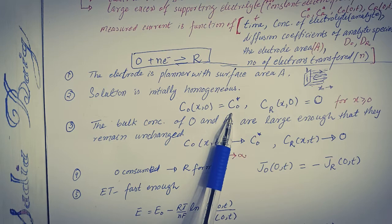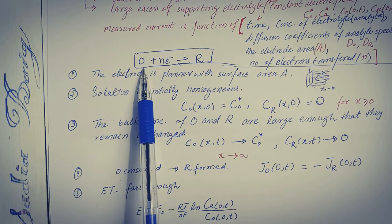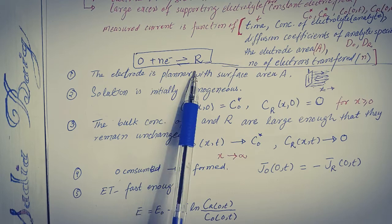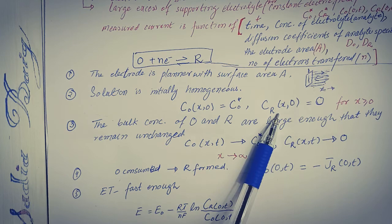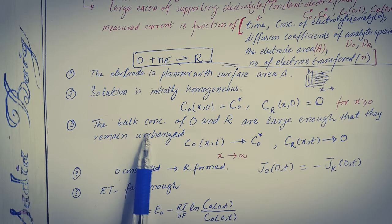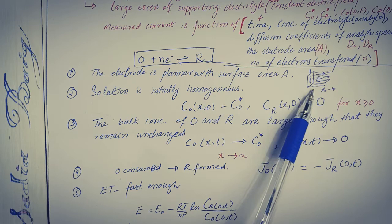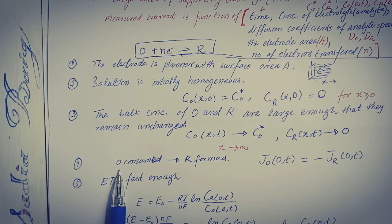The second consideration is that the solution is initially homogeneous, so the initial concentration of the oxidized form equals its concentration in the bulk — both at the surface and in the bulk, the species have the same concentration. The third consideration is that the oxidized form is available at the electrode surface and has not yet been reduced, so the concentration of the reduced form at the electrode surface is zero at time t = 0. The bulk concentrations of oxidized and reduced forms remain unchanged when changes occur at the electrode surface.